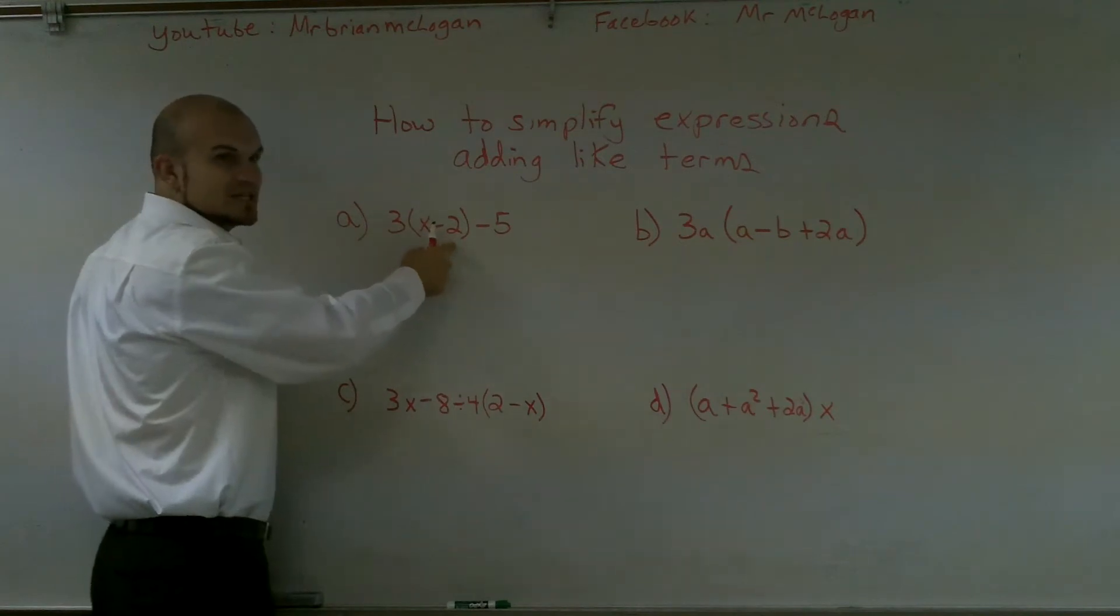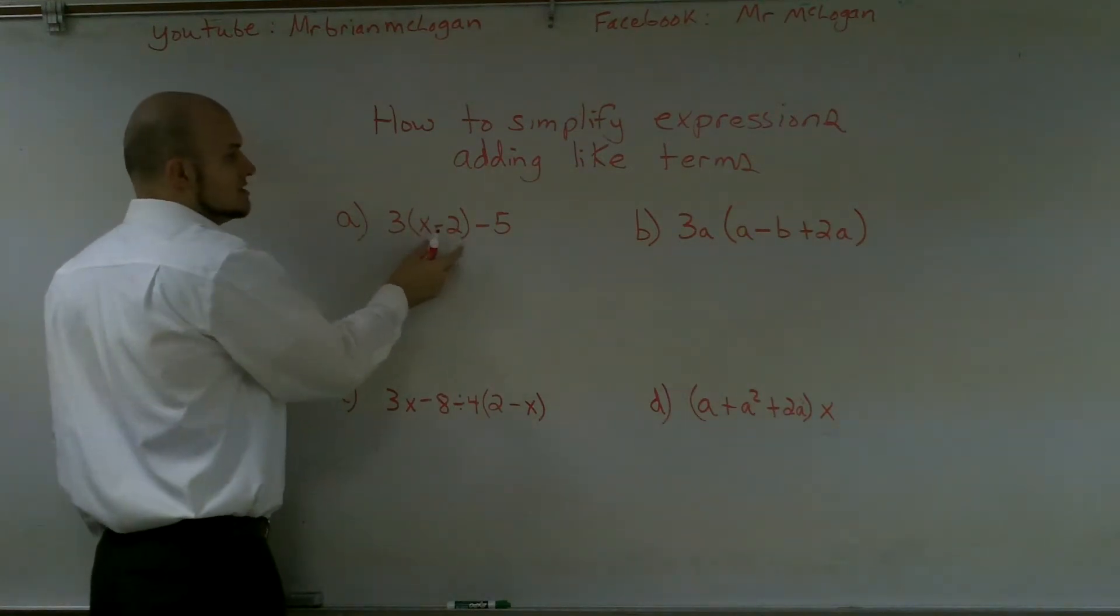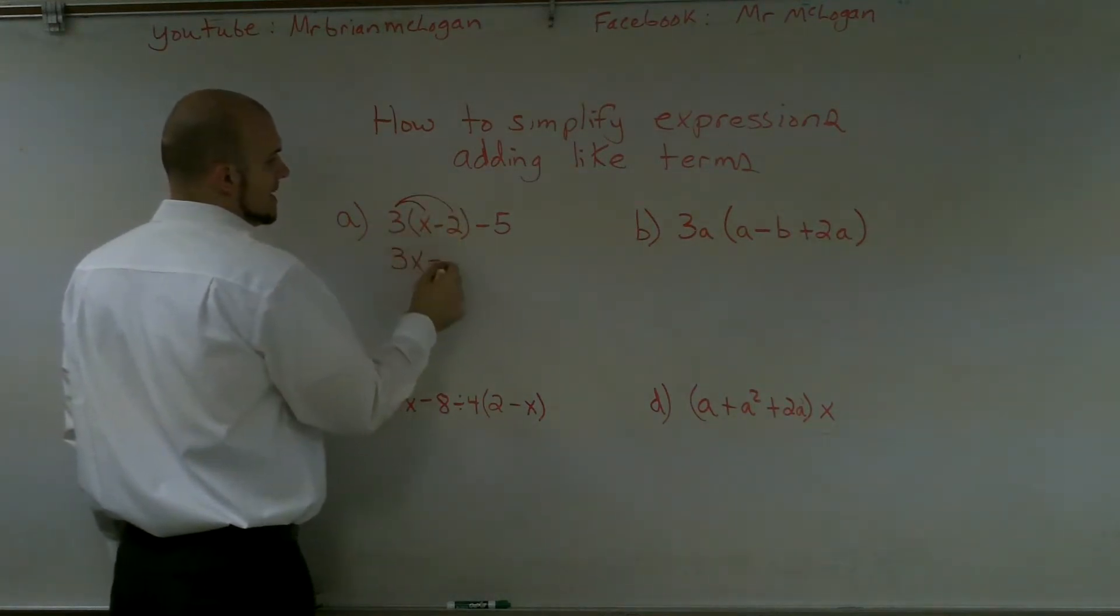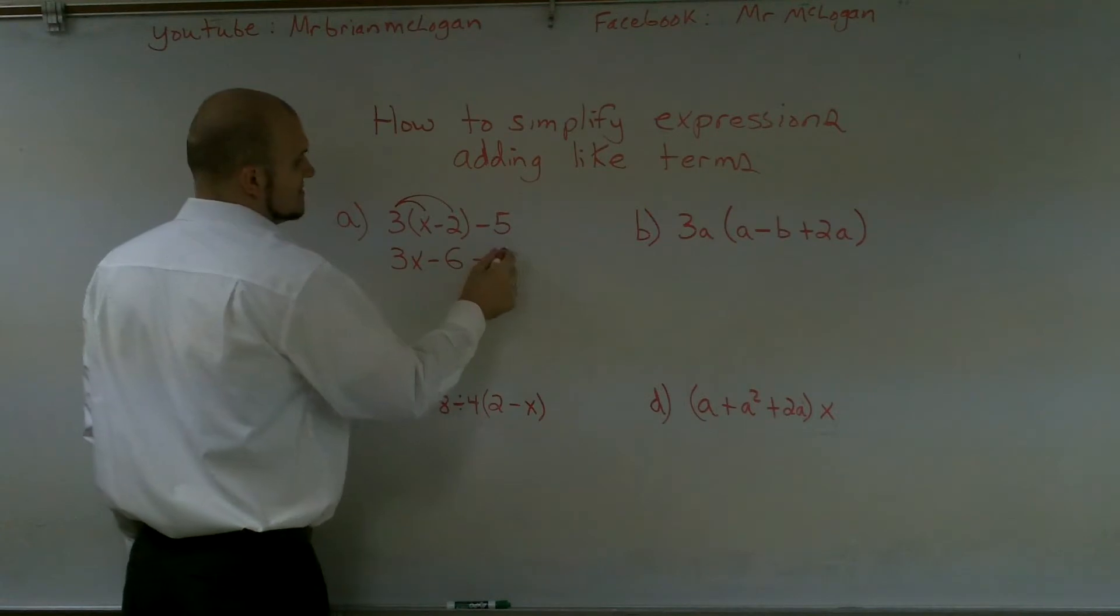And now looking here, I cannot simplify x minus 2 because they're not like terms. So therefore now I'm going to have to go and use my distributive property. So I get 3x minus 6 minus 5.